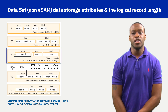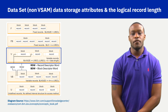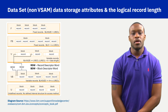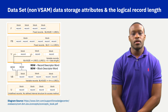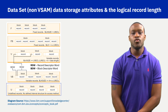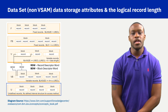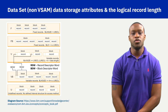When the records in the dataset are of varying lengths, the dataset record format attribute is V for variable. Each variable length record begins with the length of the record. A record format of VB, variable block, will have each block begin with the length of the block and each record in the block begin with the length of the record. A special record format of U, undefined, is commonly used for executable modules where ZOS understands how these records, making up an executable program, are to be read into processing memory.